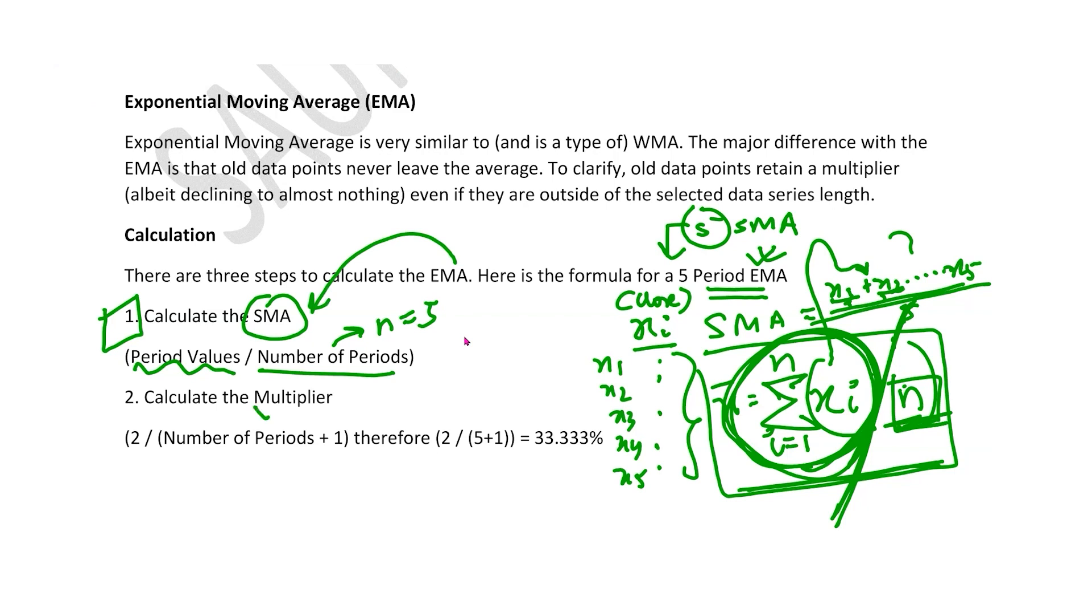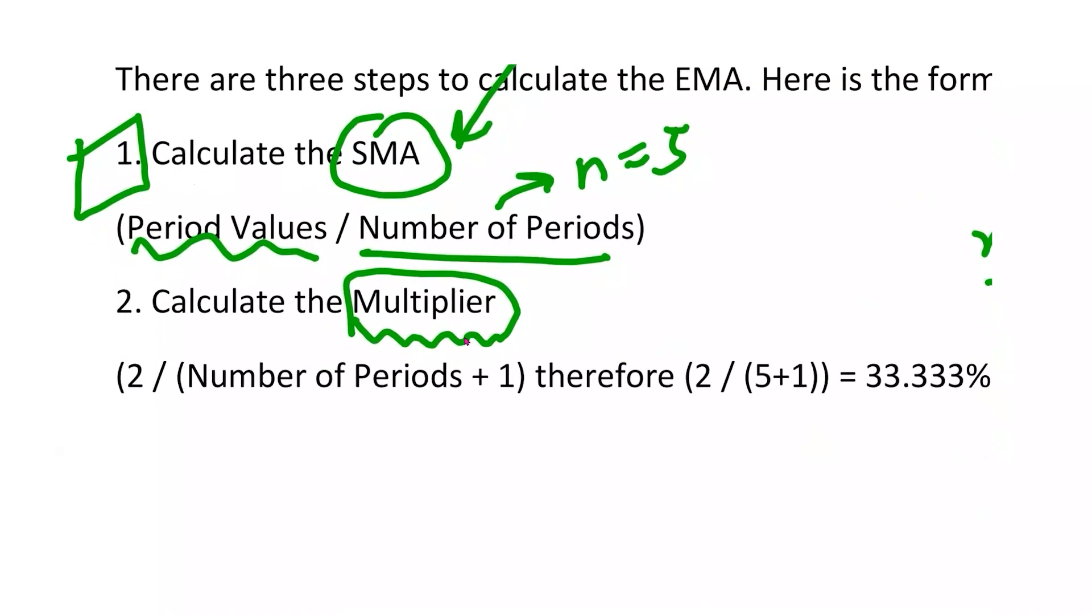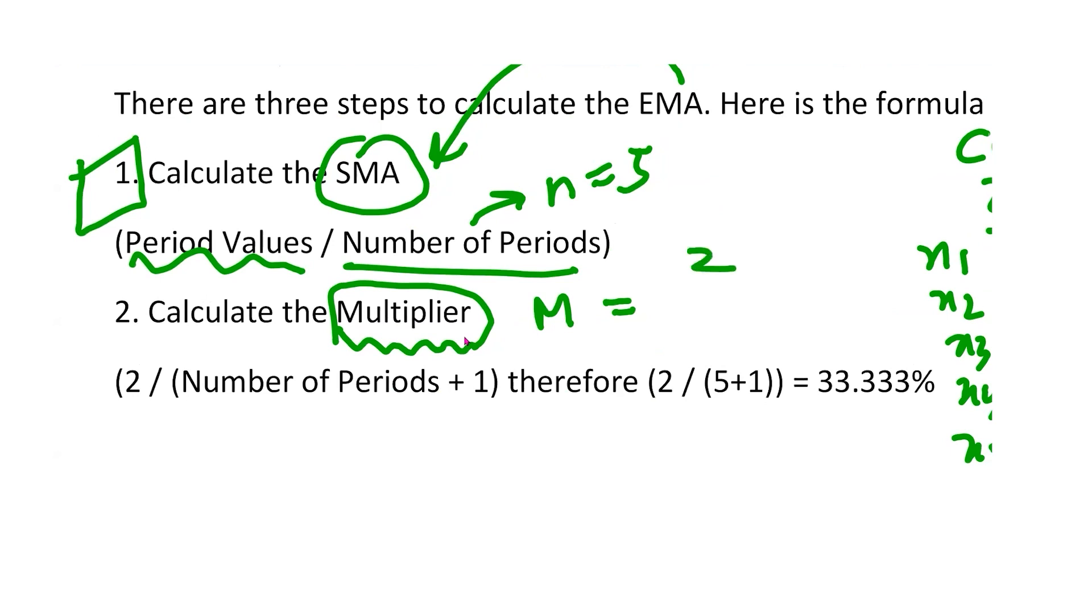Now the second thing is you have to calculate something which is called multiplier. You must be wondering why are we going through the process when you can get the EMA directly? Because you have to understand what goes behind making it. Then only you can understand what is the use of EMA and how is it different from SMA. So there's a multiplier which we have to calculate. I'm calling it m. Now the formula of that multiplier is actually 2 divided by n plus 1. That's fixed. In our case it would be 2 by 5 plus 1, which is 33% or 1 by 3. That's the multiplier. Now you know what is this 33 percent? This is the weightage you will give to the latest price. What does it mean?